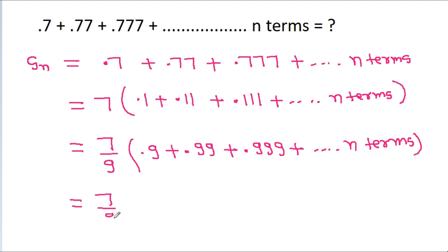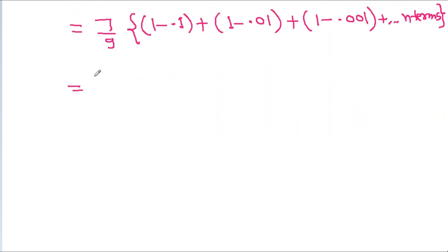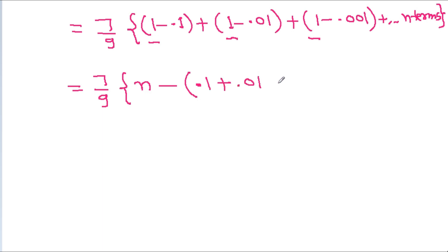And it is 7 by 9 times, where 0.9 is (1 minus 0.1), plus 0.99 is (1 minus 0.01), plus 0.999 is (1 minus 0.001), plus up to n terms. And it is 7 by 9 times, where 1 plus 1 plus 1 (n times) equals n, minus (0.1 plus 0.01 plus 0.001 plus up to n terms).